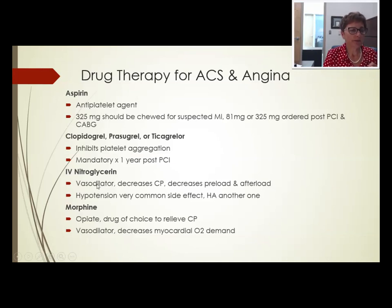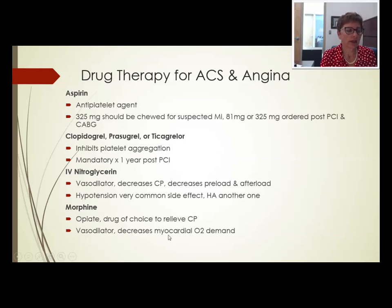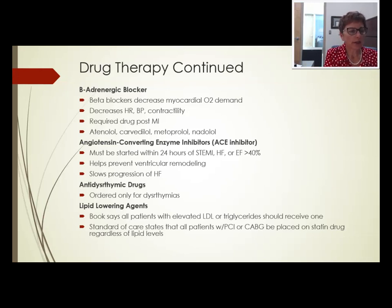IV nitroglycerin is given for chest pain — it's a vasodilator that decreases both preload and afterload; hypotension and headache are common side effects. Morphine is a vasodilator and drug of choice to relieve chest pain; it decreases myocardial oxygen demand. Beta blockers, ACE inhibitors, and anti-dysrhythmic medications are also used. If someone has atrial fibrillation, they may be placed on an anti-dysrhythmic med.